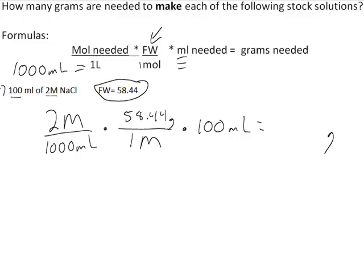If you're doing this calculation the long way, notice that our mole units will cross themselves out, our milliliter units will cross out, and so we'll be left with our unit in grams at the end. To figure this out, we could take 2 divided by 1,000 times 58.44 times 100, and that will give us 11.688.